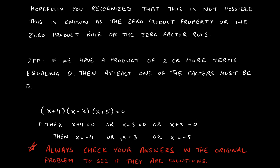These are potential solutions to this problem, but that does not mean they are confirmed solutions to the equation. You should always check your answers in the original problem. In this case, plugging in −4 gives 0 times anything = 0, so it's a solution. Plugging in 3 gives 3 − 3 = 0, and 0 times anything = 0. Similarly, −5 + 5 = 0, and 0 times anything = 0. All three are indeed solutions.